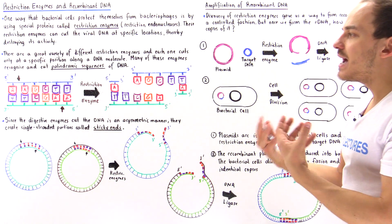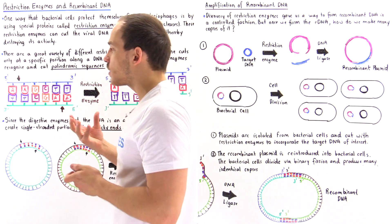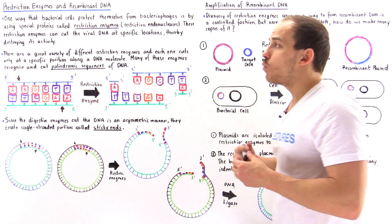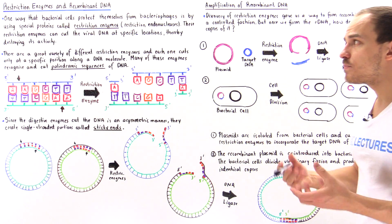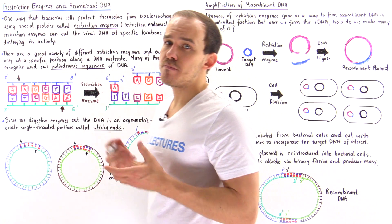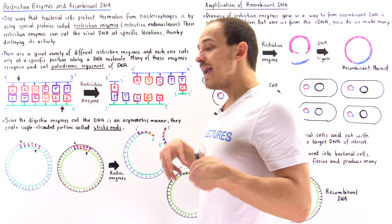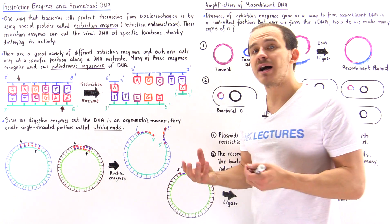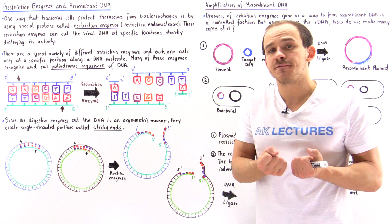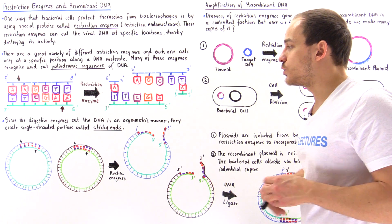When scientists discovered this, they realized that one important application of restriction enzymes would be to form recombinant DNA molecules. A recombinant DNA molecule is a DNA molecule that consists of two or more different DNA sequences from different DNA molecules.